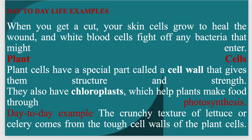Plant cells have a special part called a cell wall that gives them structure and strength. They also have chloroplasts which help plants make food through photosynthesis.